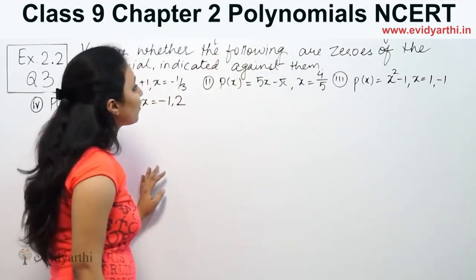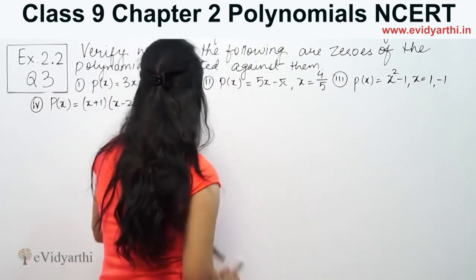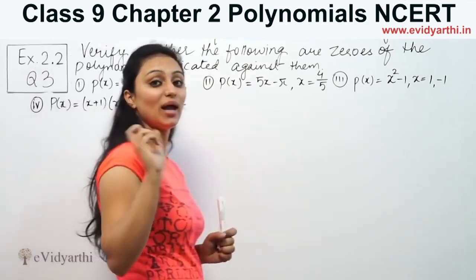It says verify whether the following are zeros of the polynomial indicated against them. We have these polynomials given. In case of values given, we have to check if it is a zero or not.